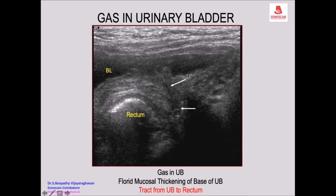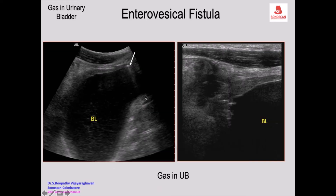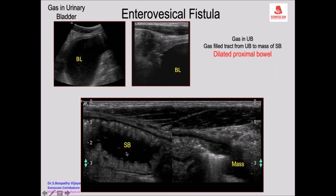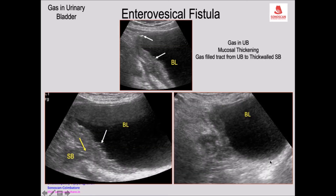Here we don't see the classic flat-tire sign gas bubble. When you look for that thick-walled bladder, in one particular area there is marked thickening of the wall of the urinary bladder with a gas-filled tract extending from partial obstruction to the bowel, with non-specific thickening of the wall of the small bowel which has infiltrated the bladder - indicating an enterovesical fistula. But there was no live sign of the flat-tire.